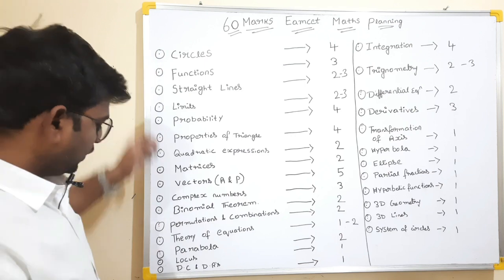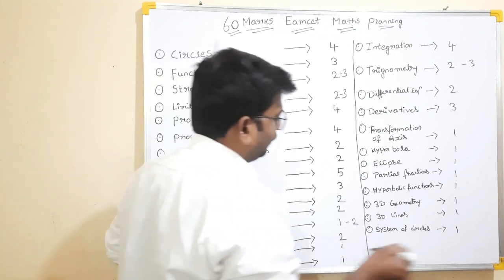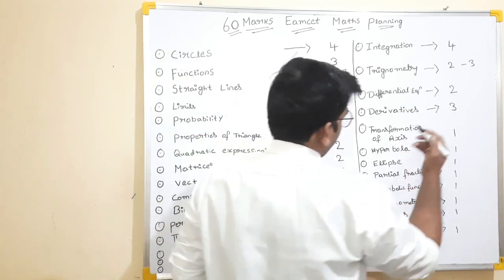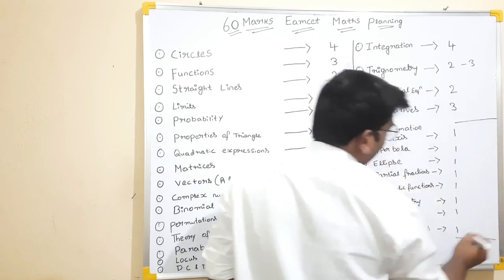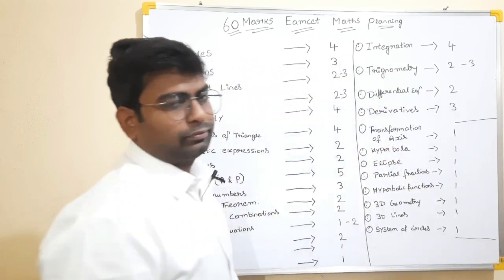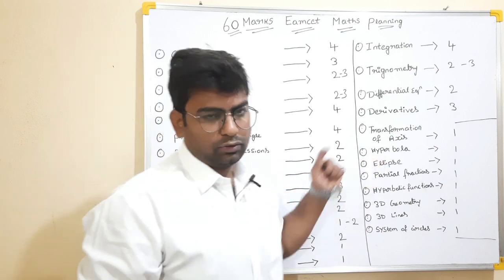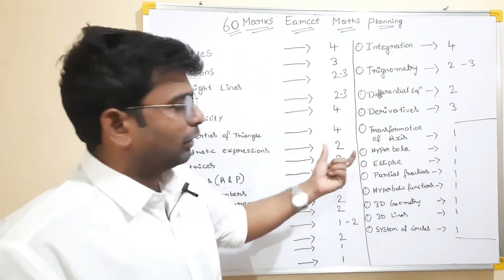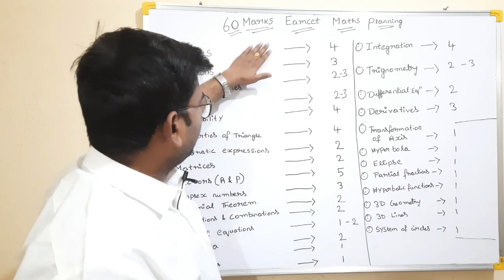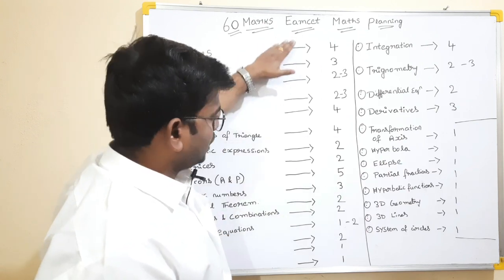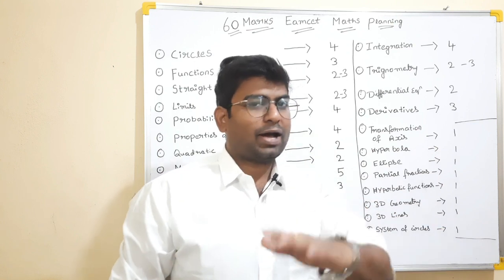First, you can see here, it is easy. And after that, you can see here. This slot is easy. This slot is easy. You can see here it is roughly 50 marks — easy chapters. You can see the average to easy. This method is easy, 50 marks.